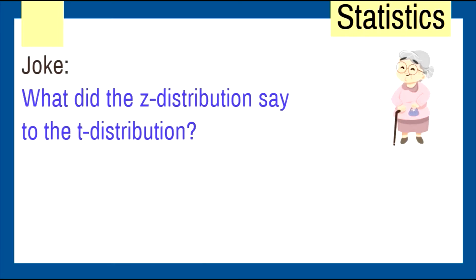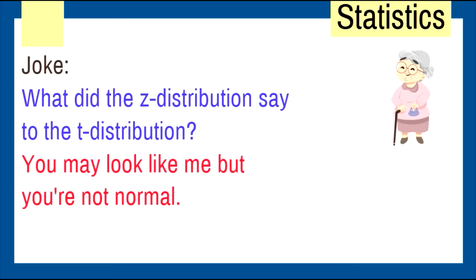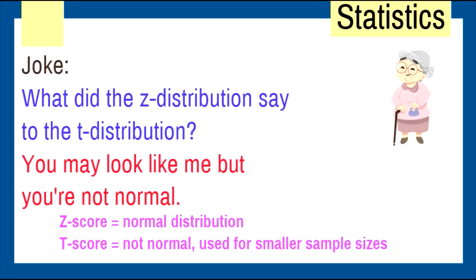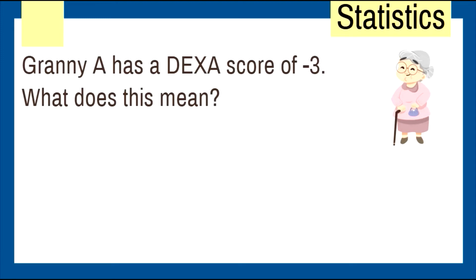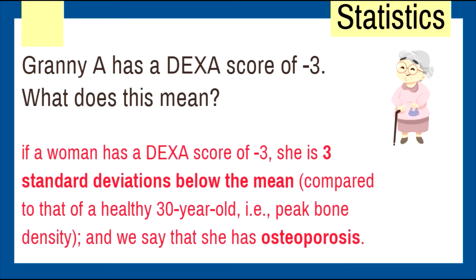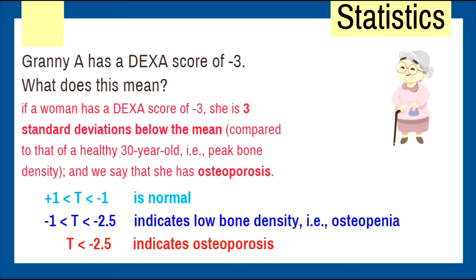What did the z-distribution say to the t-distribution? 'You may look like me, but you're not normal.' The z-score has a normal distribution; the t-score does not and is used for smaller sample sizes. For example, the DEXA score uses a t-distribution. If Granny A has a DEXA score of minus 3, she is three standard deviations below the mean — below negative 2.5, which by convention means osteoporosis.